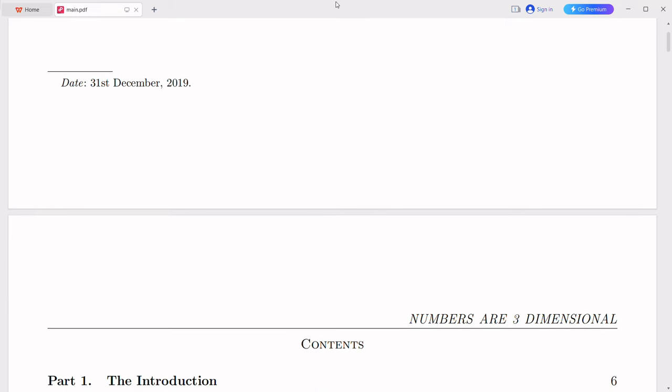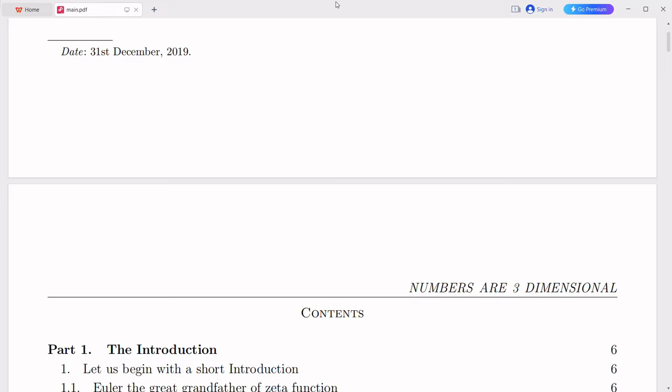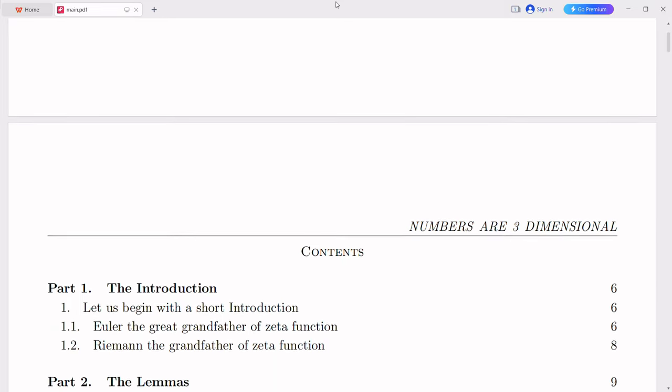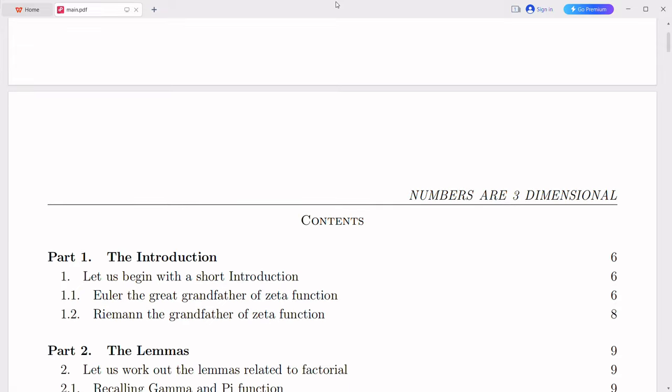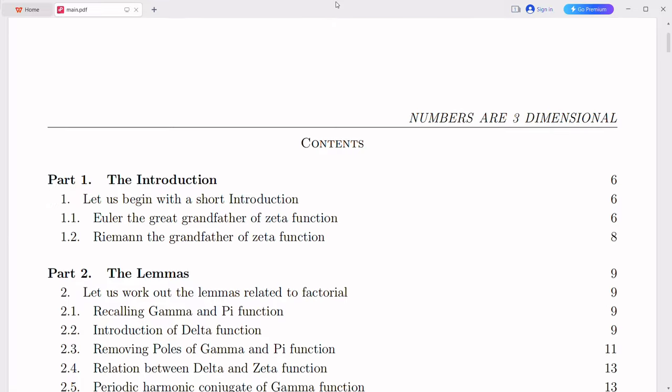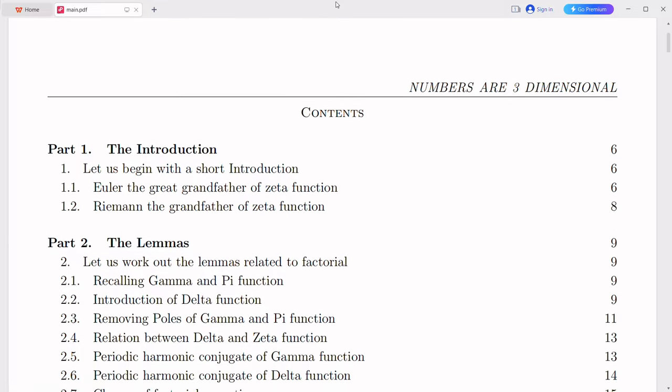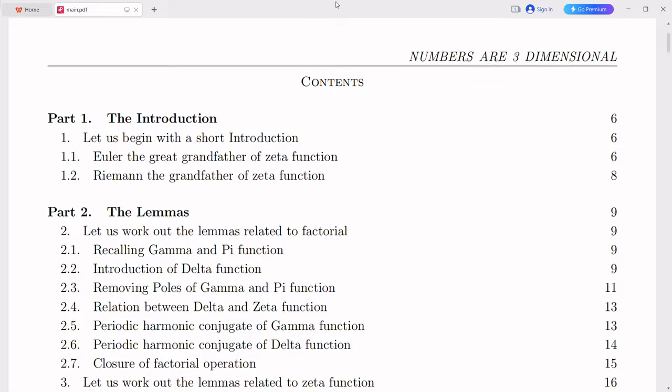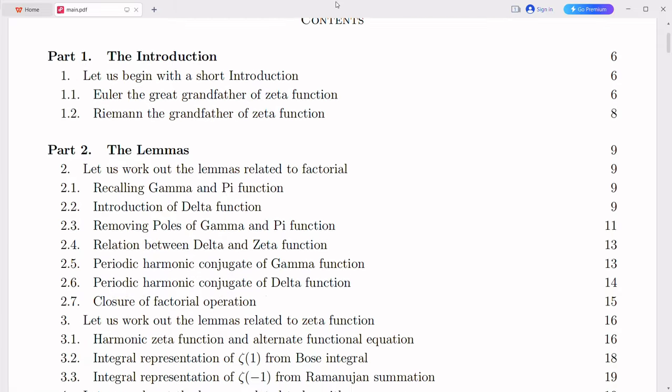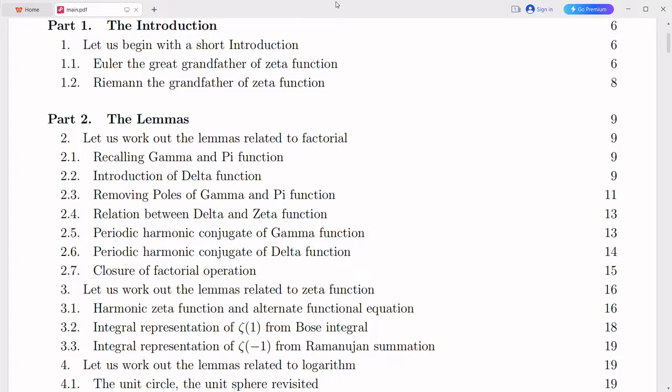Before we delve into the process of extending the domain of the Riemann zeta function and my personal journey in attempting to prove Riemann hypothesis, let's first grasp the essence of what the hypothesis is all about. The Riemann hypothesis was formulated by Bernard Riemann, a German mathematician, in 1859. It revolves around the distribution of prime numbers and their connection to the zeros of the Riemann zeta function.